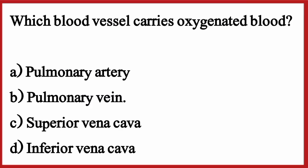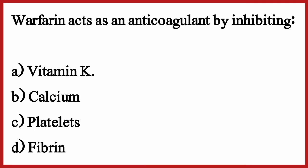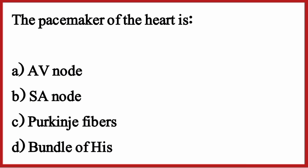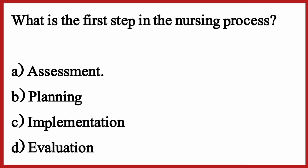Which blood vessel carries oxygenated blood? The correct option is option B: Pulmonary vein. Warfarin acts as an anticoagulant by inhibiting — the correct option is option A: Vitamin K. The pacemaker of the heart is — the correct option is option B: SA node. What is the first step in the nursing process? The correct option is option A: Assessment.